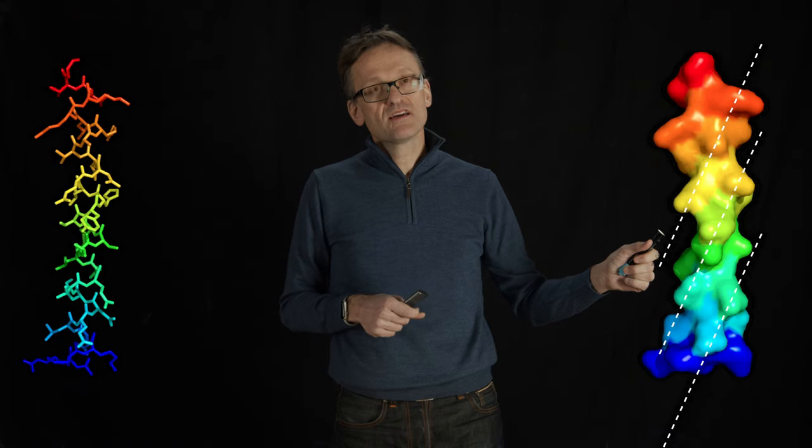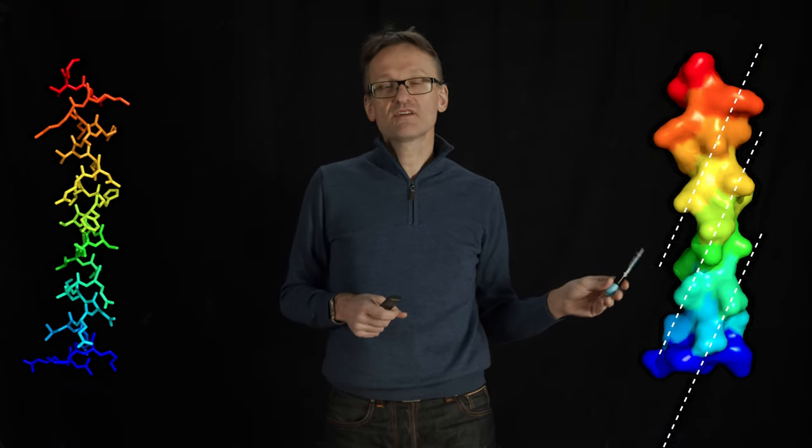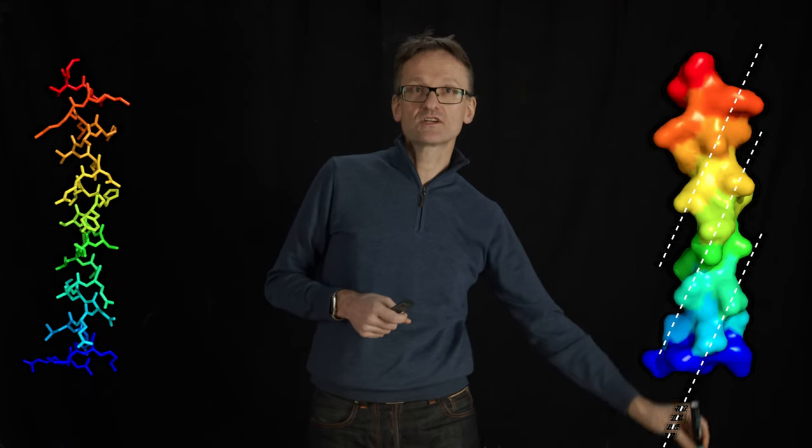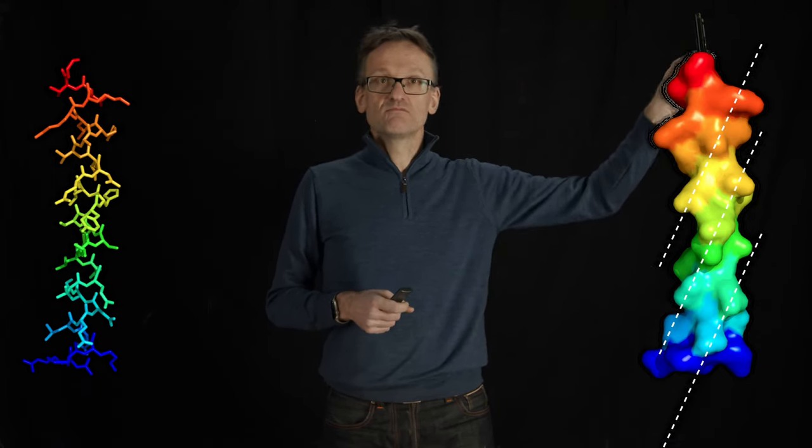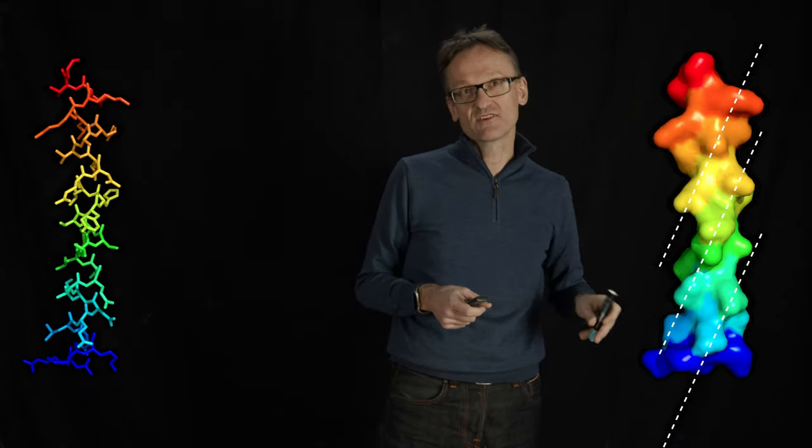If I line those up with I and I plus 4, these dotted lines make roughly a 25 degree angle compared to the vertical, to the direction of the helix here, and we just choose to say that this is a positive direction, so it's minus 25 degrees.